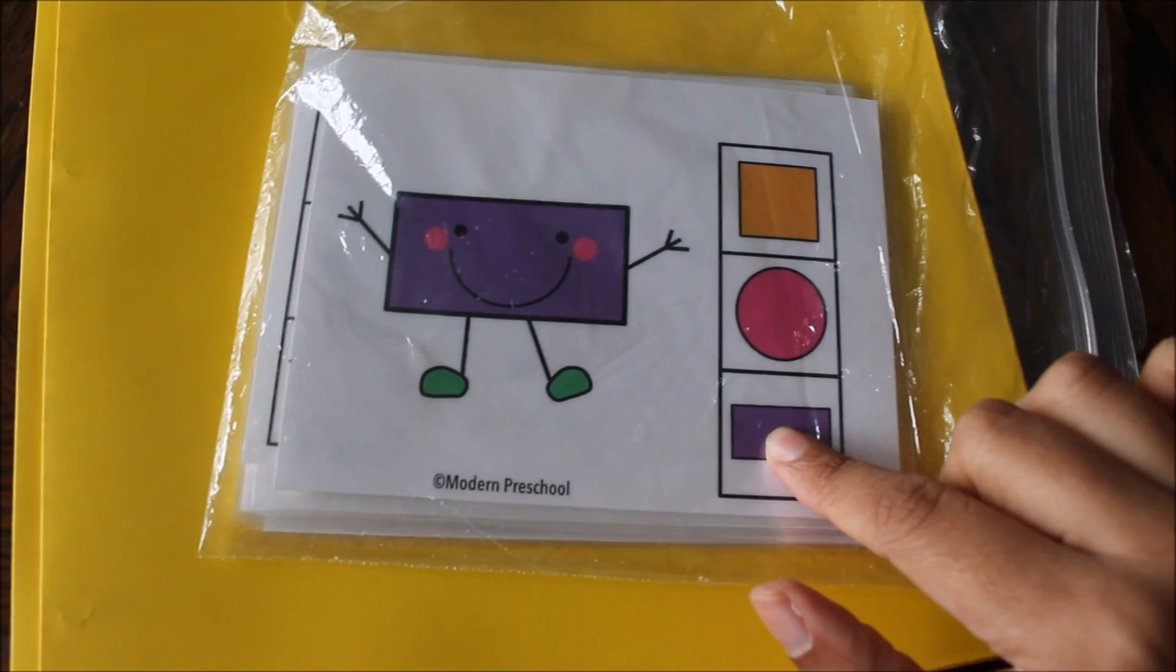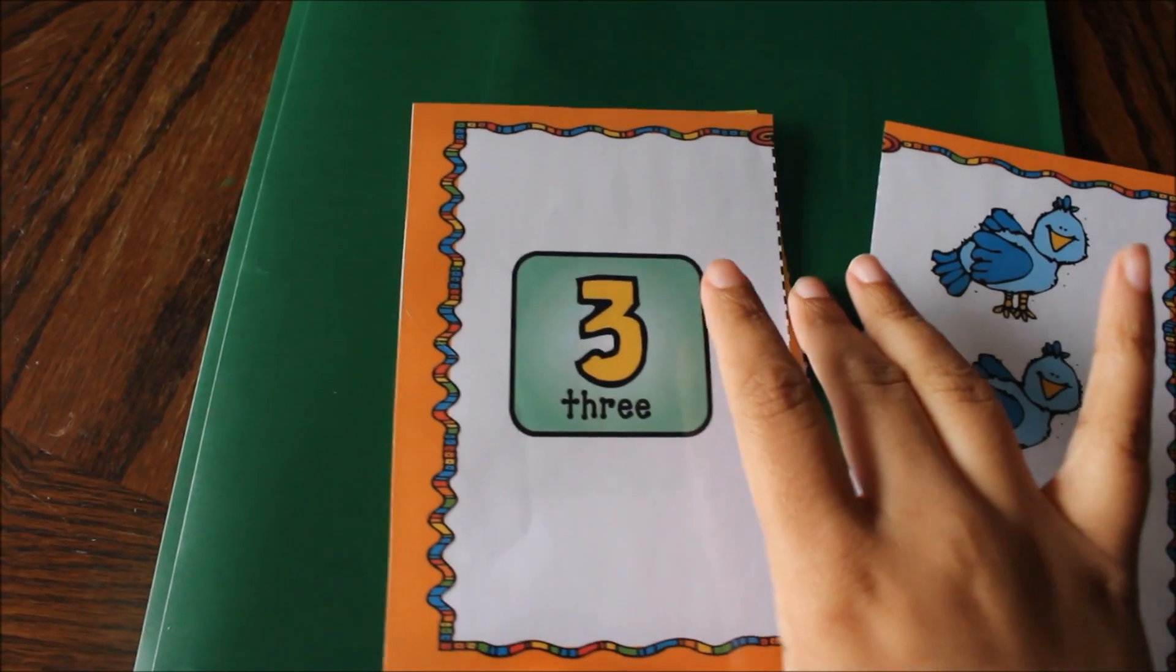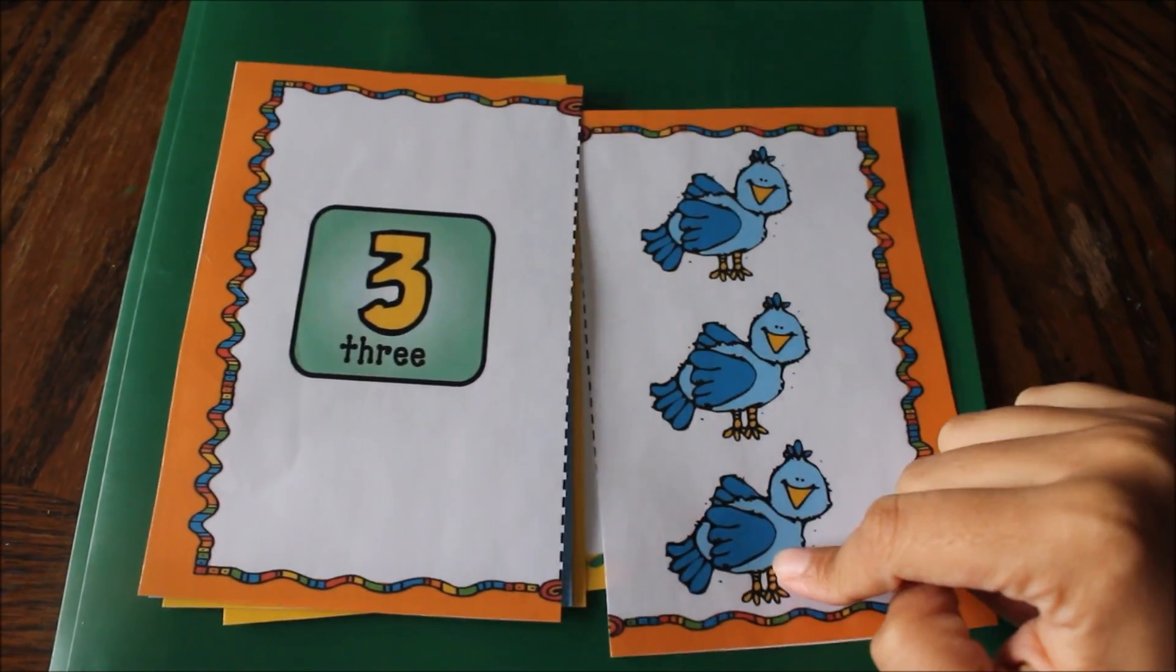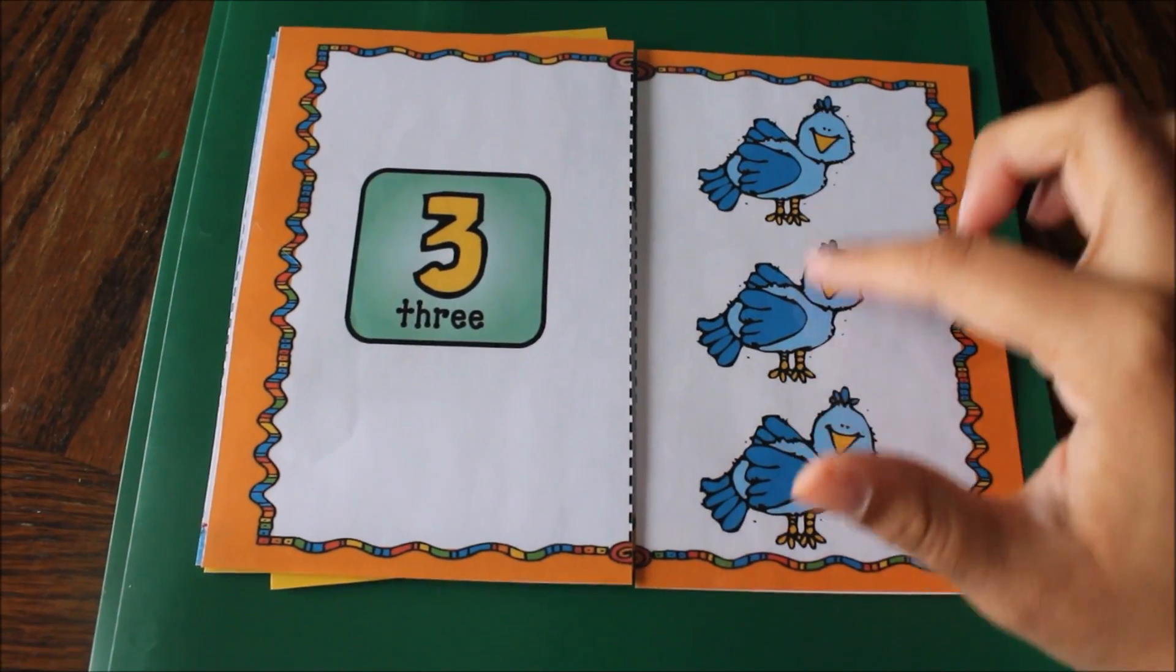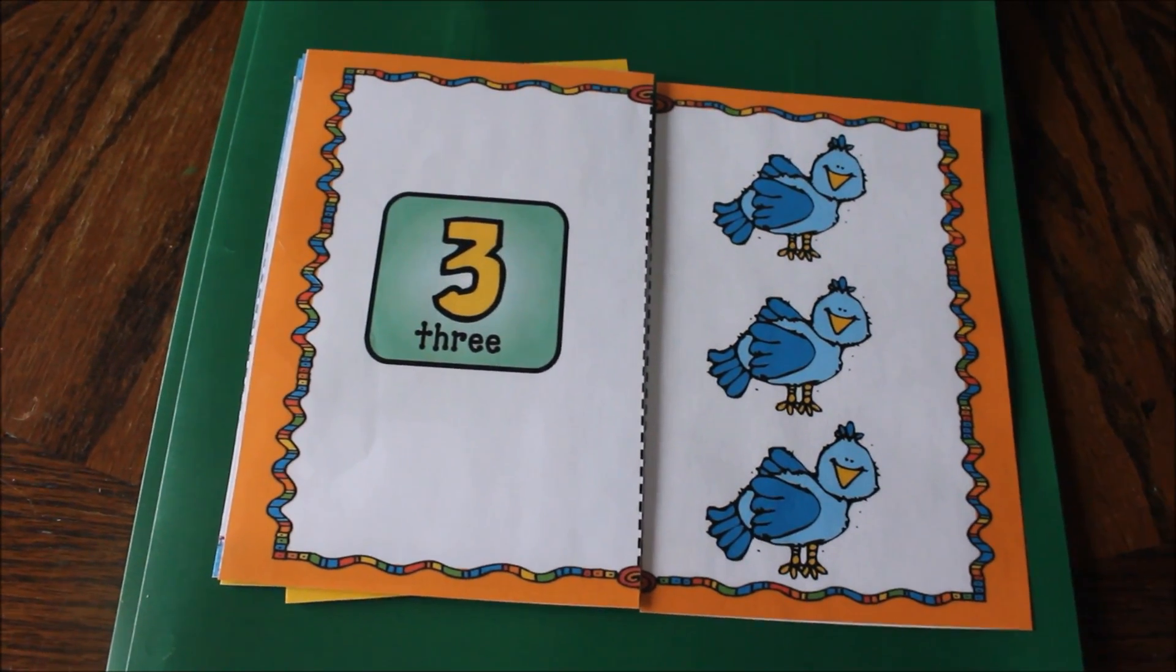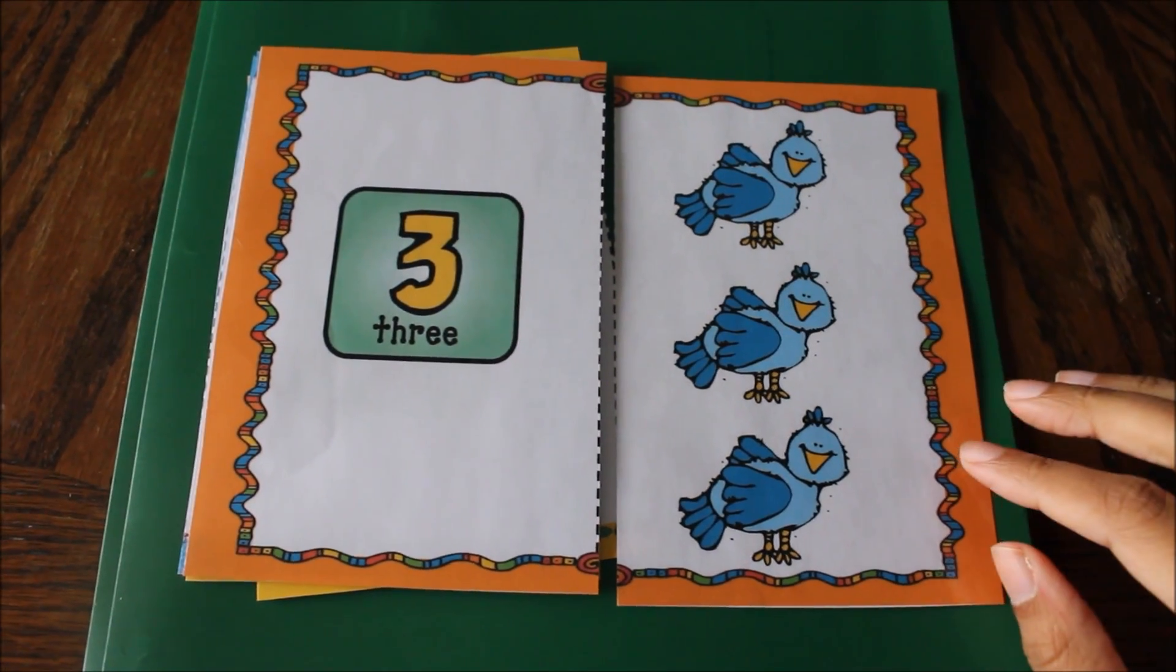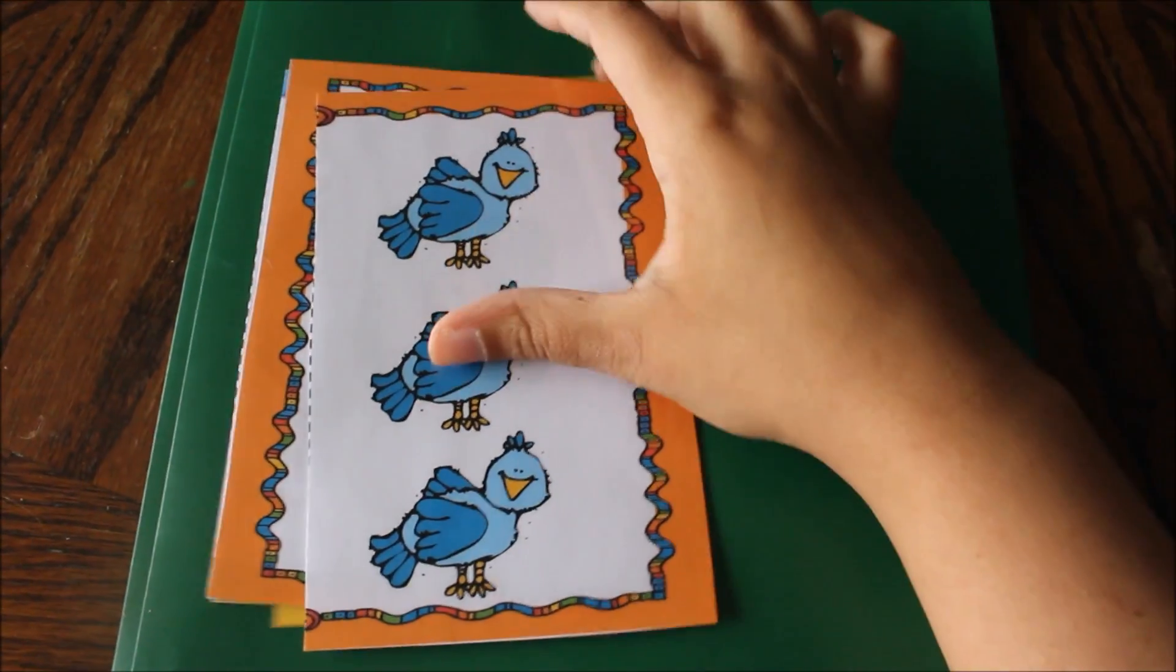Wednesday is this counting puzzle sort of thing. So we'll have the number three and then he can count the birds with me, one two three, and then also I'll have some manipulative whether it be pom-poms, M&Ms, something that he'll have to put three of them over the birds. So it's a quick activity because his attention span is not very long.